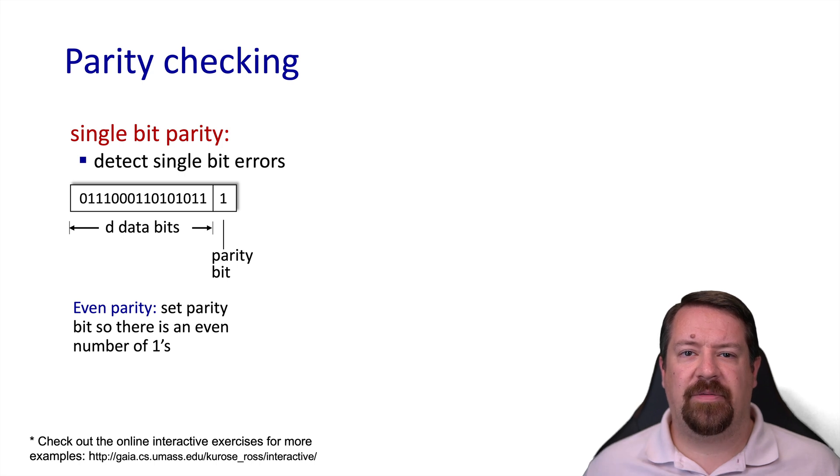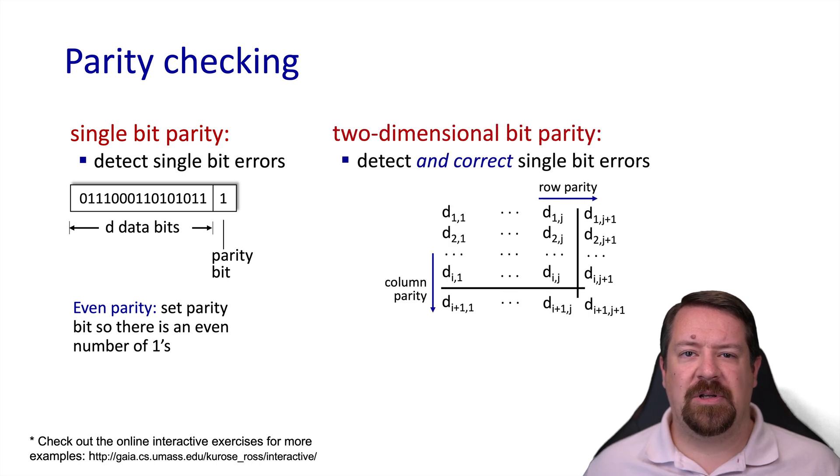So far, this is still a very weak form of error checking. A better option is two-dimensional parity checking. In this case, we line up our binary data in a number of rows instead of just one row. Then we check every row and every column's parity, and we add one more parity bit in the corner which checks the parity bits.